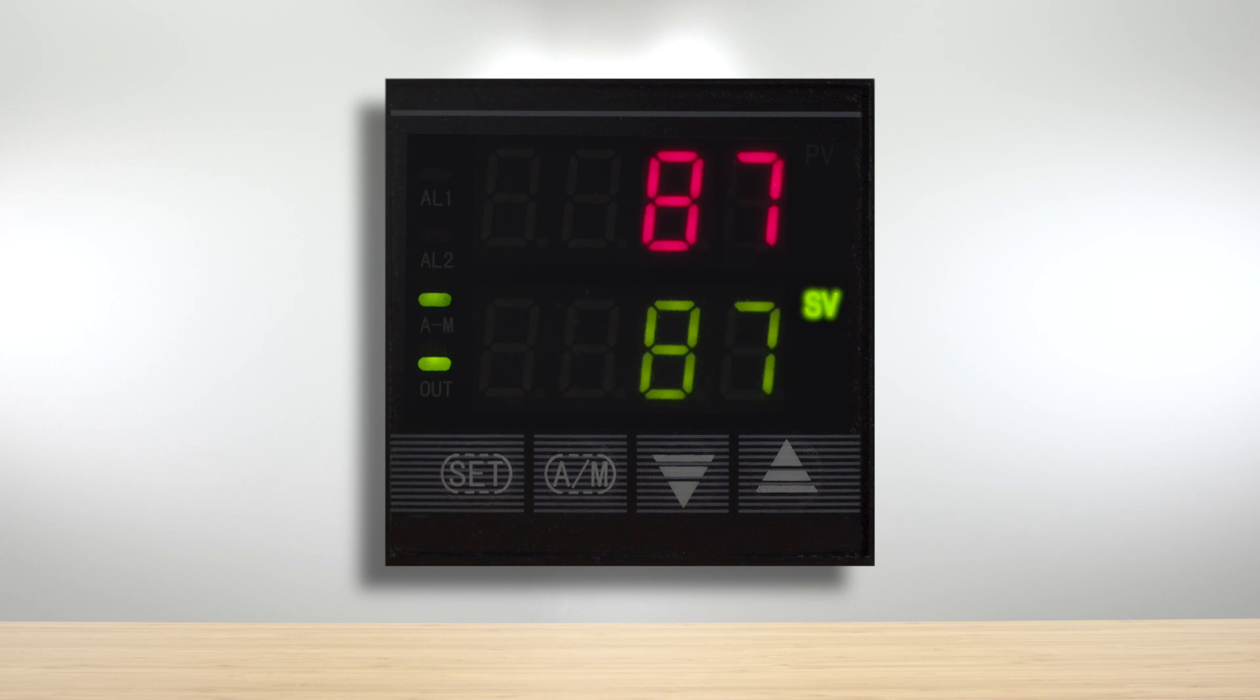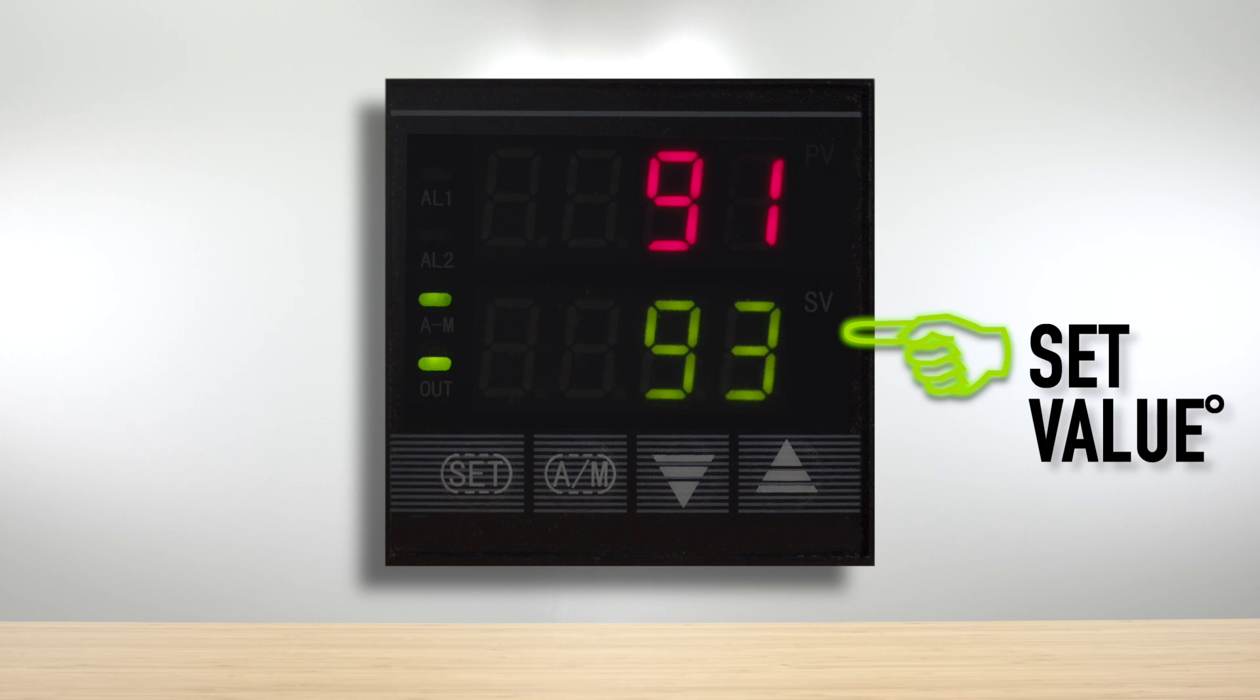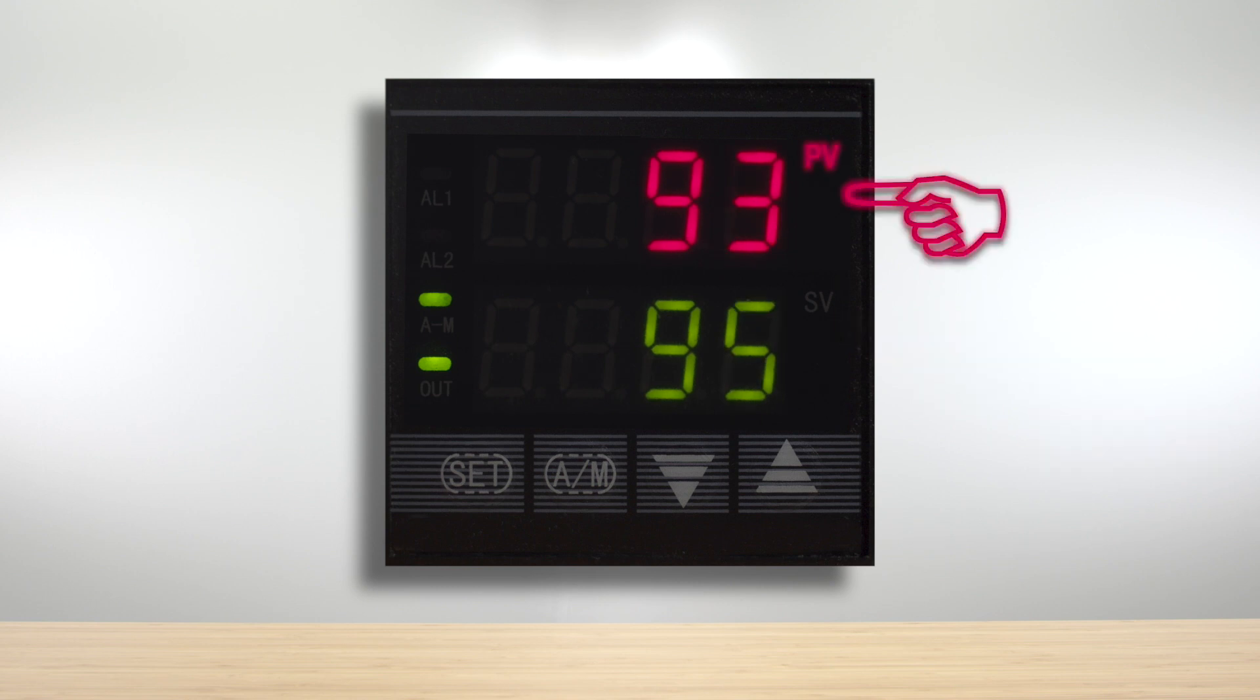So your SV, your green temperature on the bottom, that's the set value from our program. This is the rate of rise that the unit is running at. The red number on the top is the actual temperature inside the chamber.